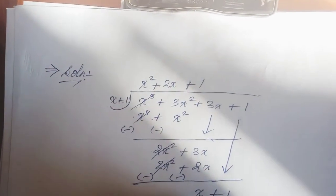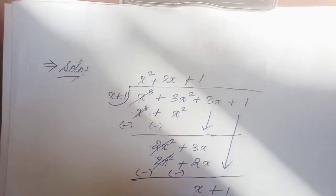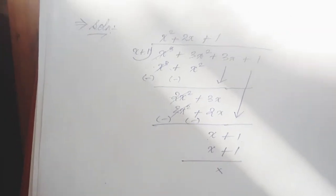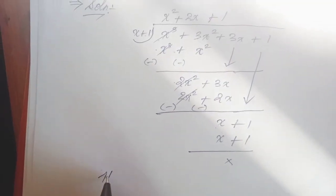2x minus x and remainder 0. We're done here. The quotient is x squared plus 2x plus 1.